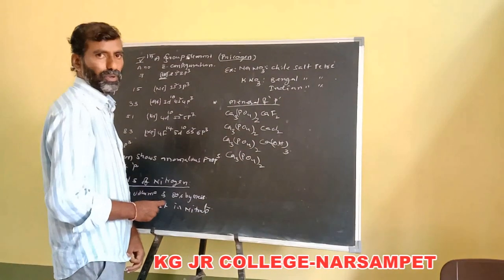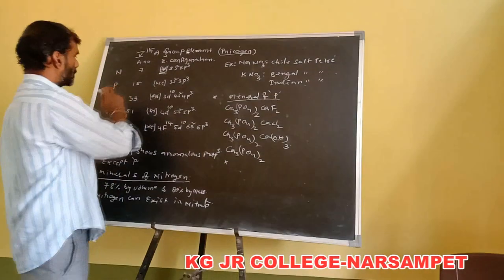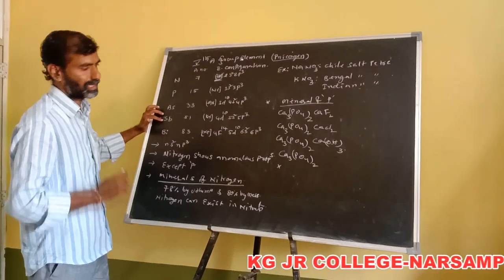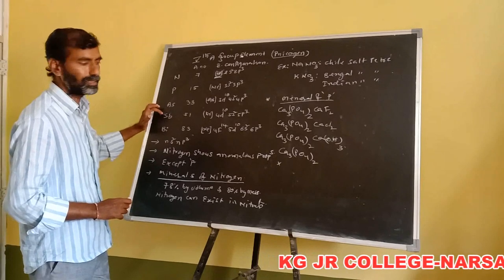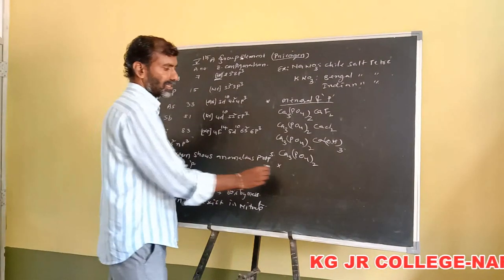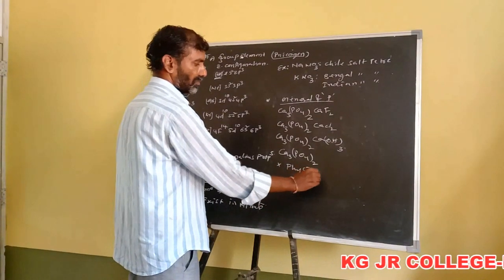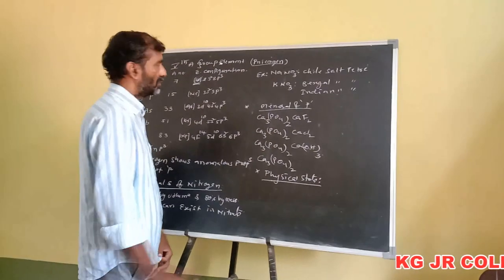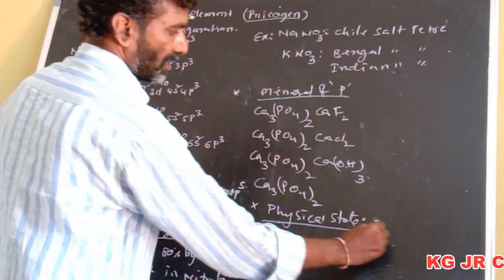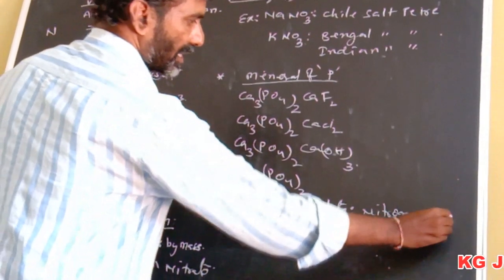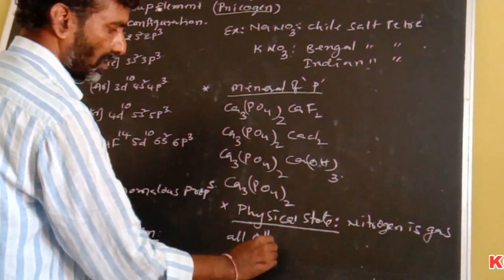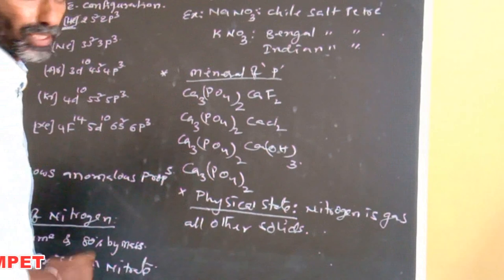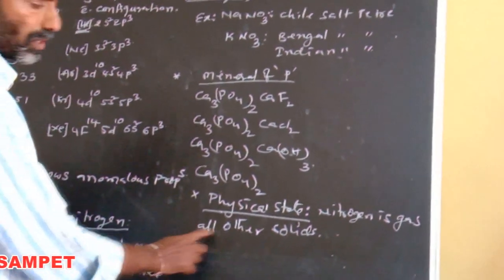Arsenic and antimony occur in sulfide minerals. Regarding physical state at room temperature, nitrogen is a gas while all other group 15 elements are solids.